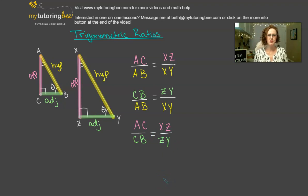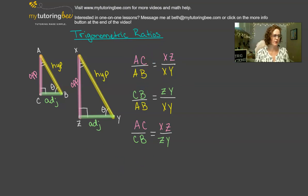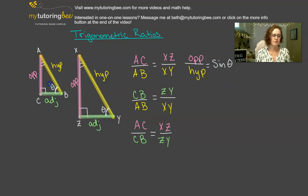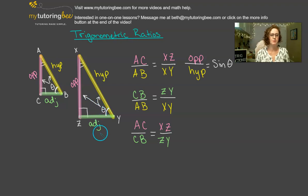Now we have special names for these — this is where our trigonometric ratios come in. For this first ratio of opposite over hypotenuse, we call this the sine of theta. The reason I say the sine of theta is because we're looking at it from the view of theta. So from theta's perspective, this is the opposite length of the triangle over the hypotenuse of the triangle. We can call that sine.